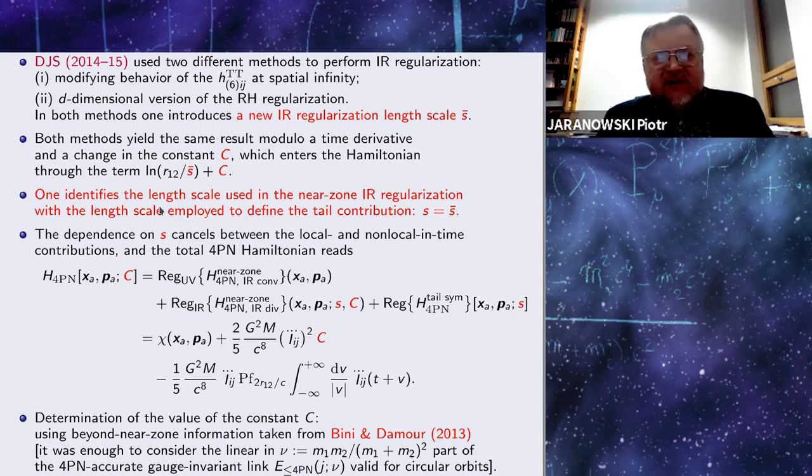In the next step, we identified the length scale used in the near-zone infrared regularization with the length scale employed to define the tail contribution. After this identification, the dependence on S cancels between the local and non-local and time contributions. So the total Hamiltonian depends only on the constant C. Then we determined this constant using beyond near-zone information taken from self-gravity computations of Bini and Damour. They computed in the linear order in a symmetric mass ratio of the masses and for circular orbits, the gauge-invariant link between the binding energy and the angular momentum of the system.